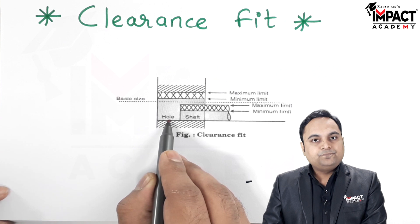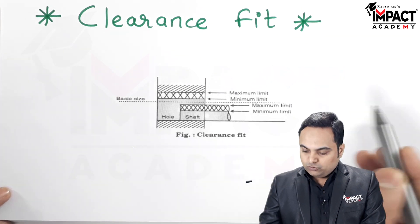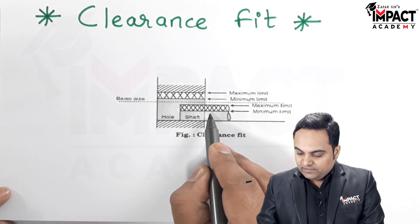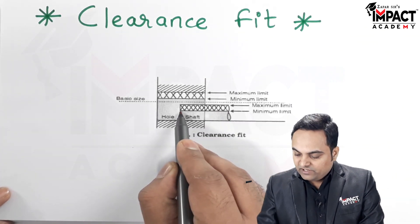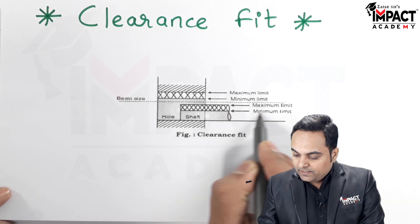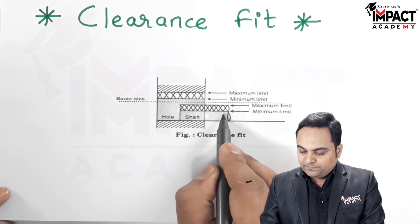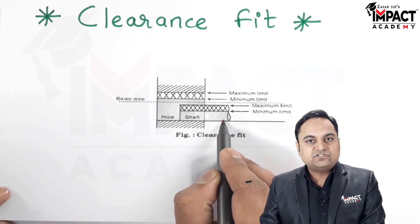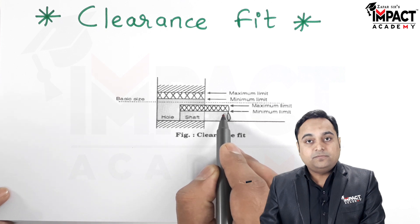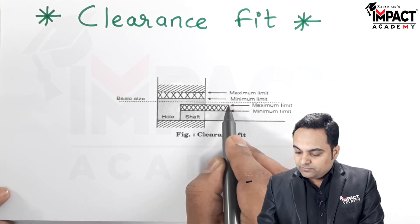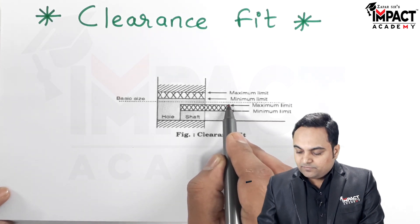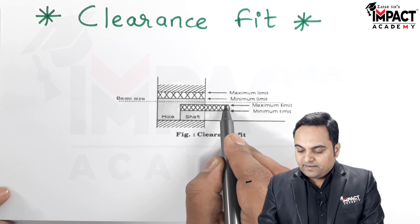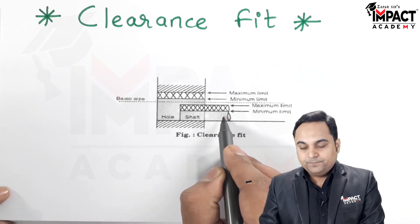When we have a shaft, the minimum limit means the minimum size or minimum diameter of the shaft. Similarly, the maximum limit means the maximum diameter of the shaft which is permitted — the maximum size of the shaft.